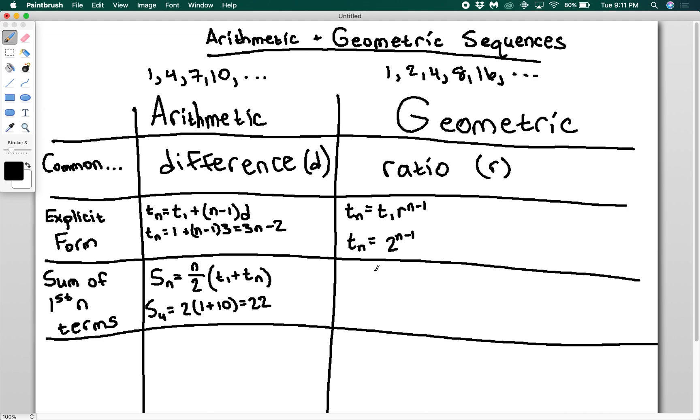For a geometric sequence, the sum of the first n terms is going to be equal to the first term times 1 minus the common ratio raised to the nth power, divided by 1 minus the common ratio.